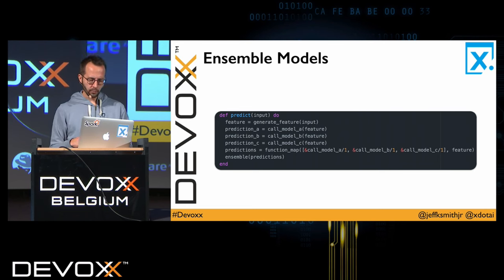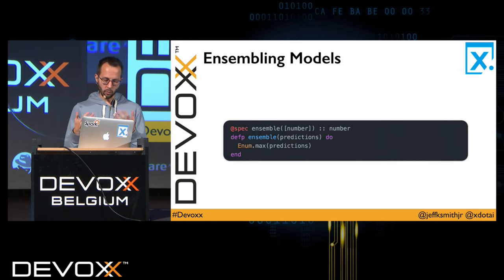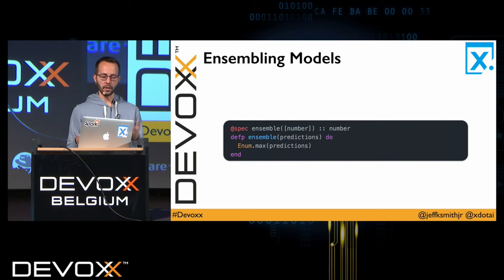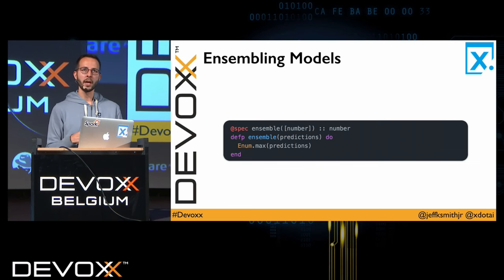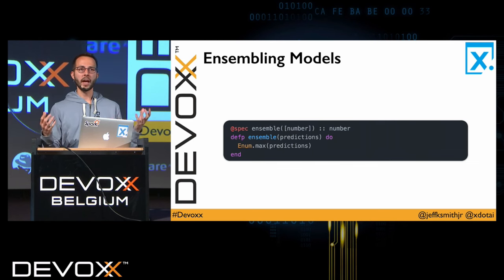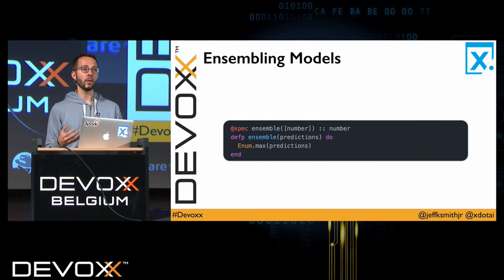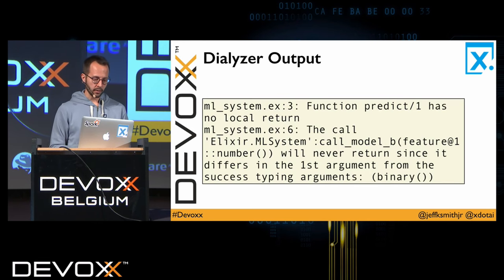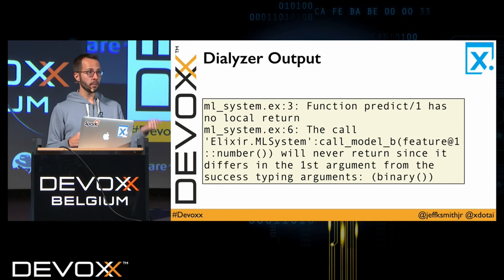Then we just need to ensemble them together. We define our ensemble function with a type signature saying we have a collection of numbers which should return a number. These are stub implementations — trivial fits on the slide — but with this sort of information we can now approximate the behavior of a more fully implemented artificial intelligence system, reason about the behaviors of all models and their possible outcomes. In particular, Dialyzer is able to analyze all that and give us results.